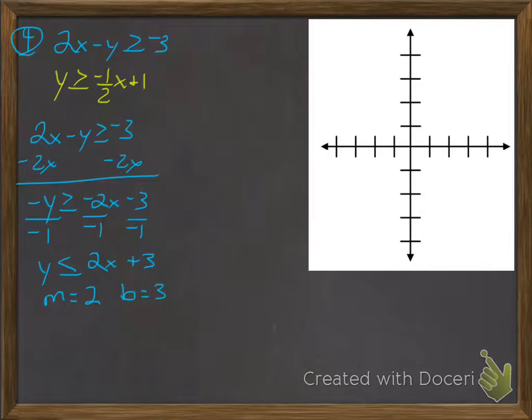And for the other one, it's already in slope-intercept form, so I don't need to do anything. I'm just going to write it down here so they're next to each other. And my m is equal to negative 1 half, my b is 1. So I'm going to graph the blue one first.